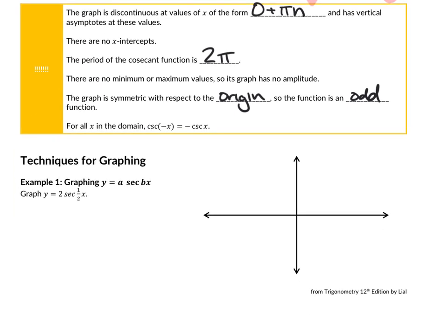When graphing these functions, the technique is to always use sine or cosine as a guide. We're going to plot not only the secant or cosecant function we care about, but also the corresponding sine or cosine it is related to. We'll use a, b, c, and d with the transformations and what we know about the basic shapes of sine and cosine.